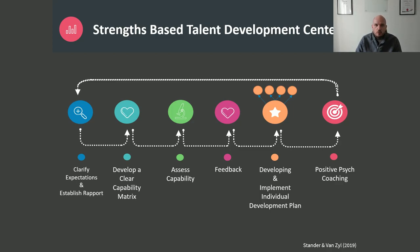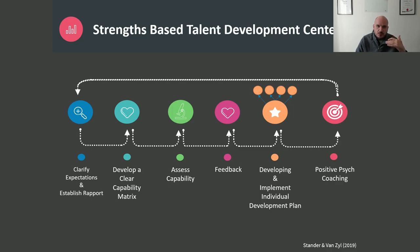We clarify expectations with our client, their manager, and their direct manager, and we establish rapport, because the relationship is the most important factor predicting success in this process. We develop a capability matrix aligned to the overall business strategy and each role. We assess people based on the next level of leadership — so if you're a vice president, we assess you against the capabilities of a president, because we want to help you grow. We provide feedback, help set a plan in place, and then coach you.